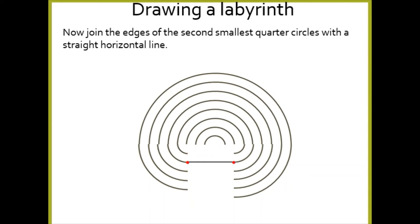How's that looking? So it should look a little bit like this before we put our line. Now you're going to join the edges of your second smallest quarter circles with a straight horizontal line. These are our quarters, okay, so that's that one here, you're going to join them together with a straight horizontal line. Horizontal means flat.